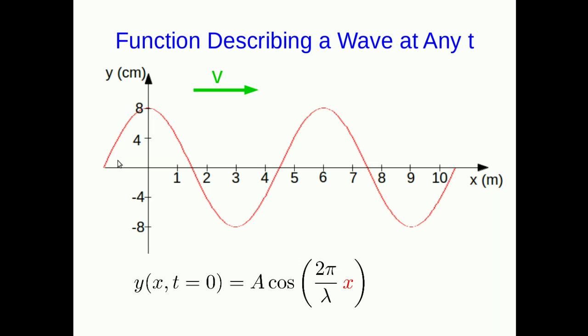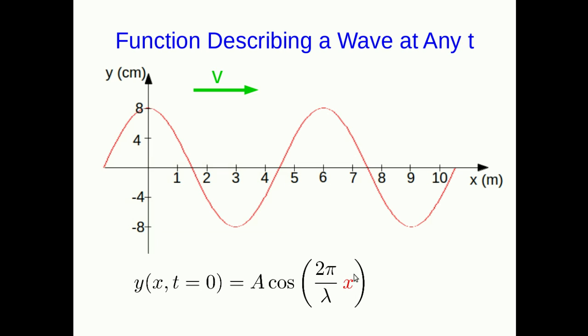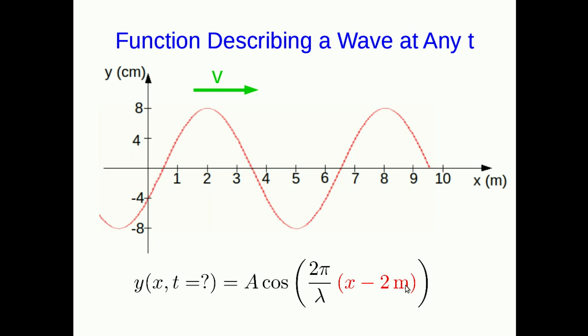Here we are with our wave. And right now it's looking like a cos function, and so we can write y at x and t equals zero is just this, just like we saw. Now, if we wanted to shift it over by two meters, and so that's at some other time, I've written t equals question mark, because I don't know what time that is. But if we did want to move it over by two meters, we would just replace our x with x minus two meters, and that shifts it.